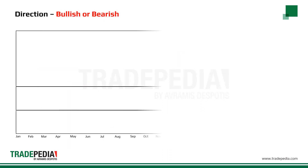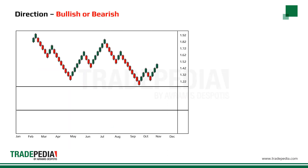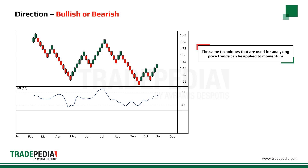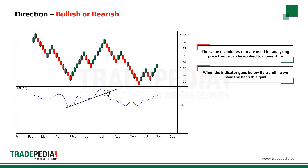Let's look at the direction of the oscillator. Similar to prices, momentum moves in trends. The same techniques used for analyzing price trends can be applied to momentum. When the indicator goes below its trend line, we have a bearish signal. When the indicator goes above its trend line, we have a bullish signal.